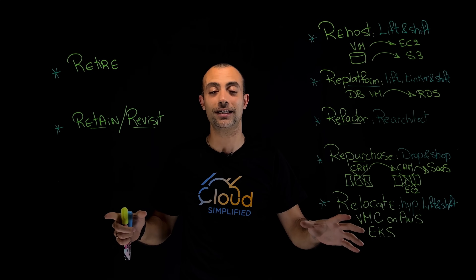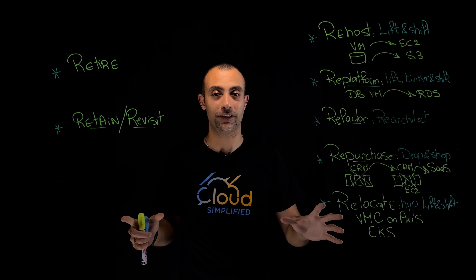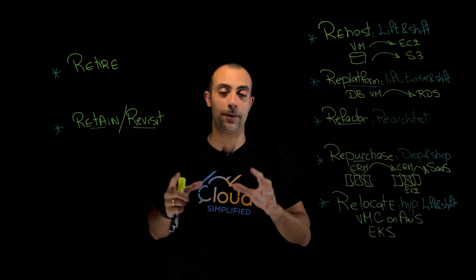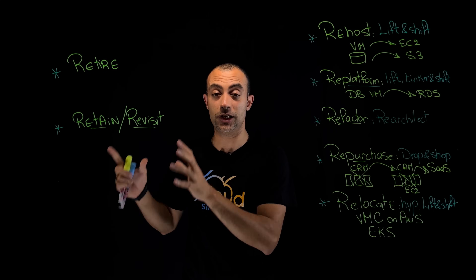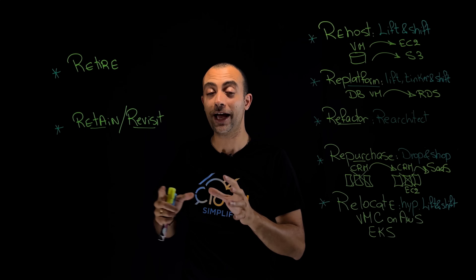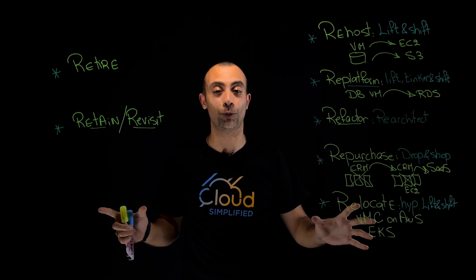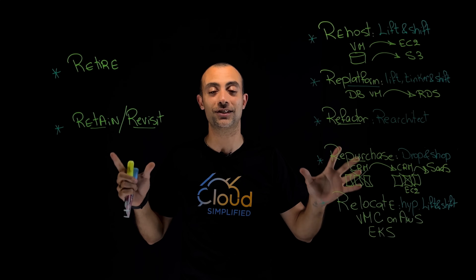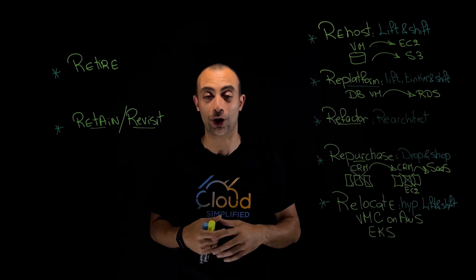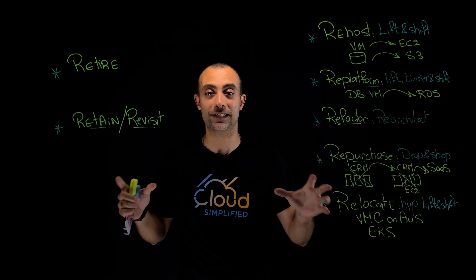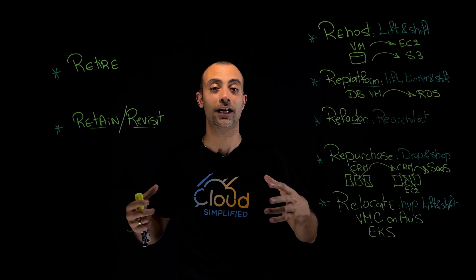To finish, here's a question based on what we explained: if I have my application and infrastructure running on one AWS region and I am migrating from one region to another region, based on what we explained — what is this migration strategy? Please leave your answers in the comments. I'll also put the AWS documentation about the seven R's in the description for any further reading.